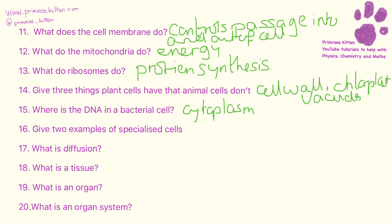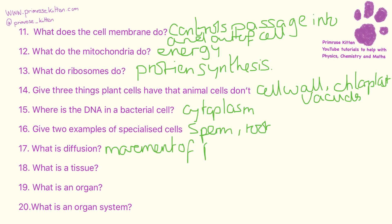Two examples of specialist cells — you can have lots here — but we could have a sperm cell or a root hair cell. Diffusion is the movement of particles from a high to a low concentration.